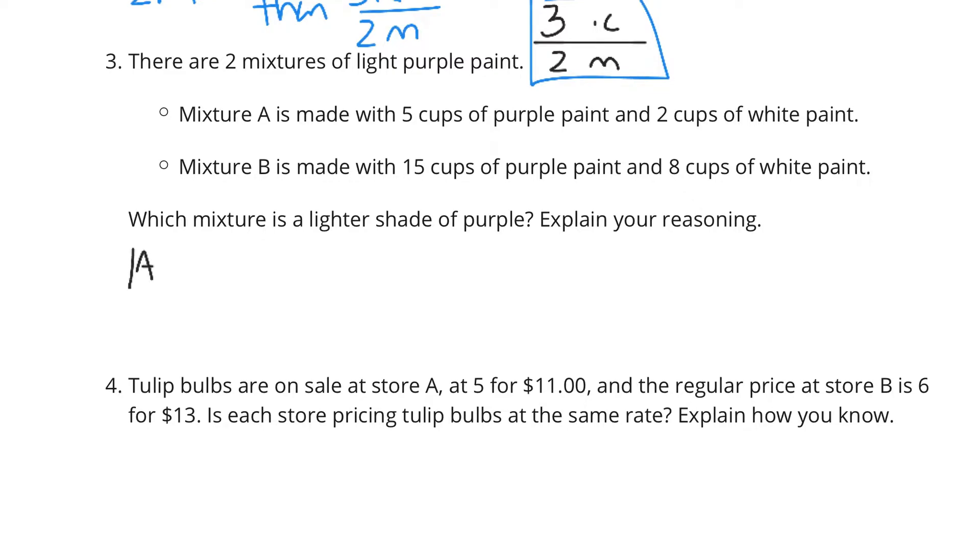Well, for A, if we have 5 purple to 2 white, and B is 15 purple to 8 white. Well, a couple of different ways to be able to compare these. What I'm going to try to do is say, well, what if I had 8 cups of white paint in this mixture A? I can get that by taking a times 4 batch. So if I multiply this 4 and 5, I get 20 purple to the 8 white versus the 15 purple to the 8 white.